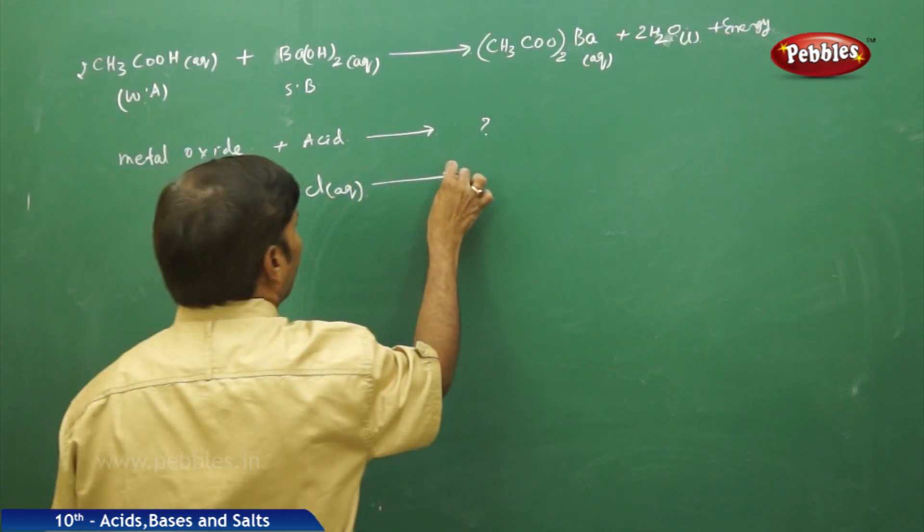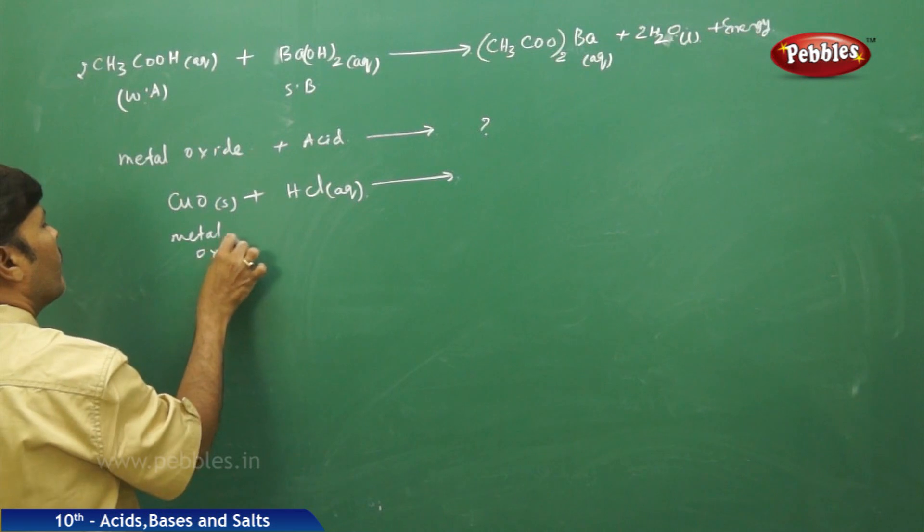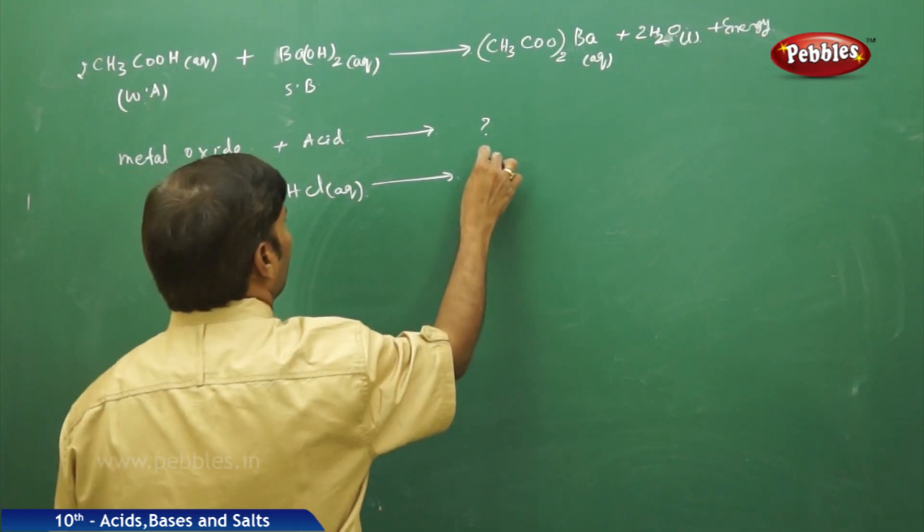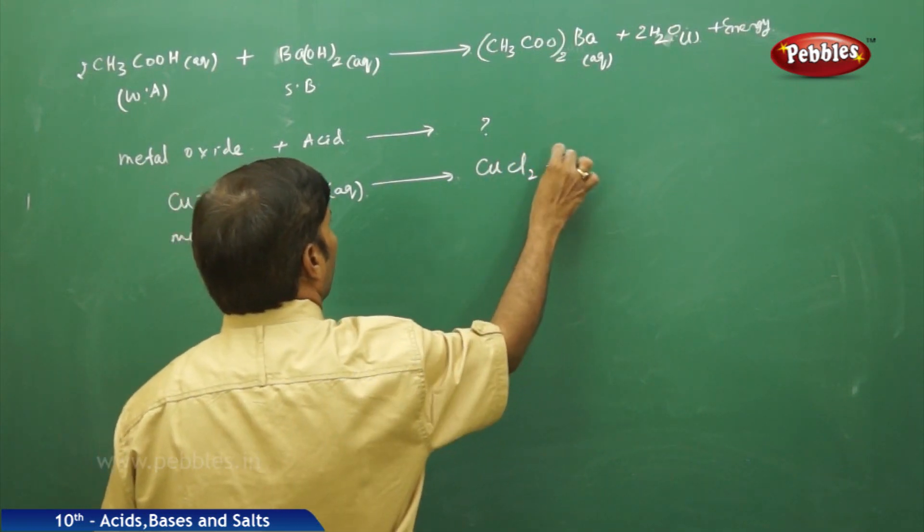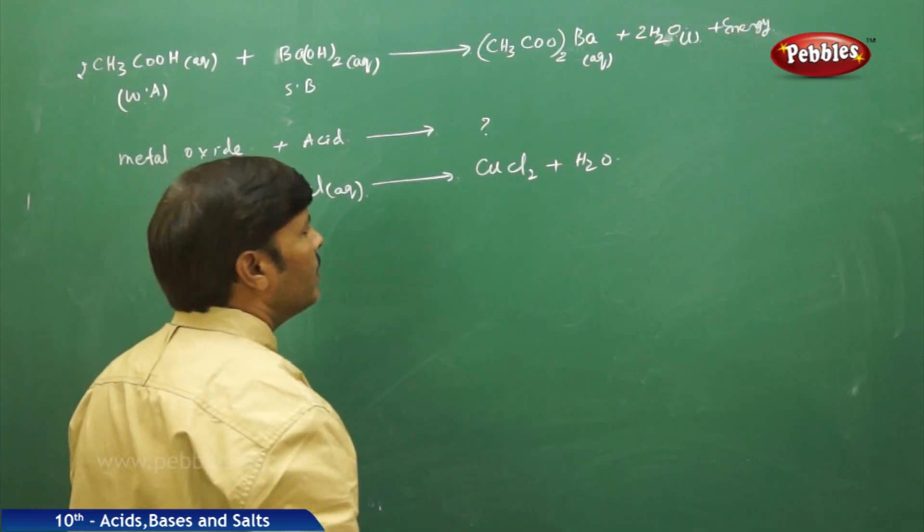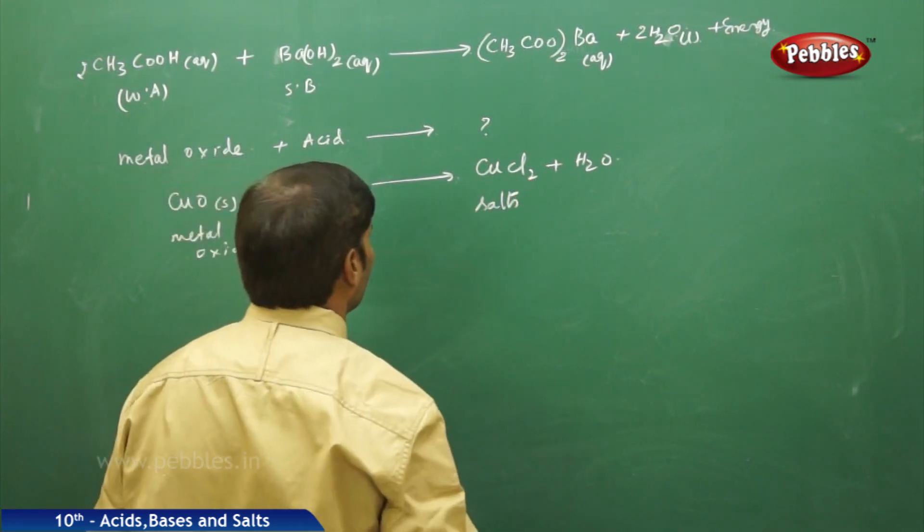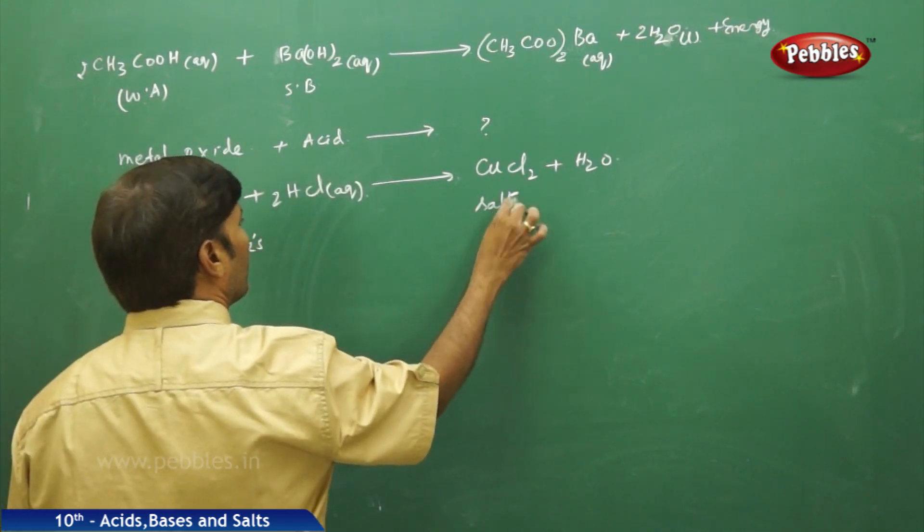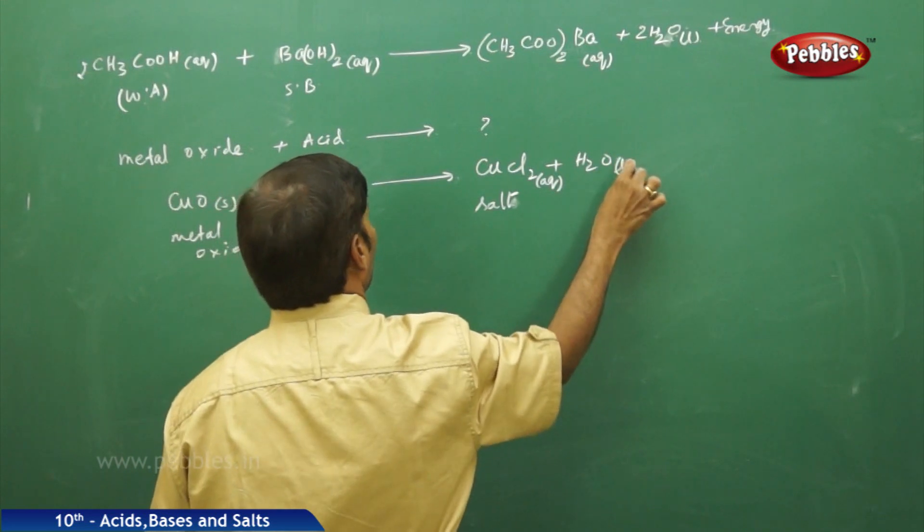So you get here, metal oxide. Metal oxide always gives that is cupric chloride plus water. Balance the equation. That means you are going to get salt and water. Cupric chloride is a salt, aqueous, and water is a liquid.